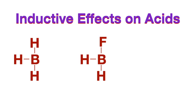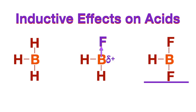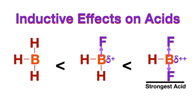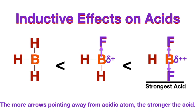Now let's rank these three Lewis acids where boron is the acidic atom in each compound. On the left side, we only have hydrogens attached to the boron. In the center, we have one fluorine attached to the boron, which creates electron withdrawing effects, making a partially positively charged boron. On the right side, we have two fluorines attached to the boron, which creates twice the amount of electron withdrawing effects, making an even greater partially positively charged boron — making it the strongest acid. So the more electron withdrawing groups you have on an acidic atom, the stronger the acid. Or just see it as the more arrows you have pointing away from the acidic atom, the stronger the acid.